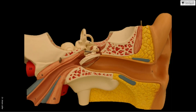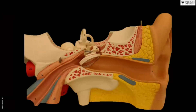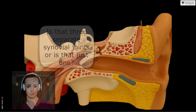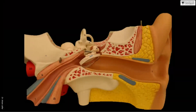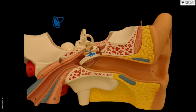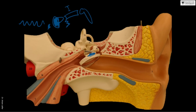With three bones there are two joints. On one side the malleus is fused to the tympanic membrane, and on the other side the foot piece of the stapes is attached to the oval window. So there is one joint between the malleus and incus, and another between the incus and stapes — from lateral to medial.